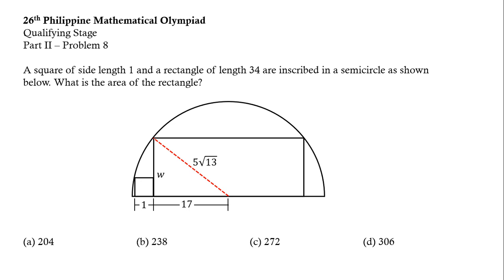Now to find the value of W, let us apply again the Pythagorean theorem. So we have 5 square root of 13 squared equals W squared plus 17 squared. This is equivalent to 325 equals W squared plus 289. Solving for W, we have W equals square root of 36 which is equal to 6.